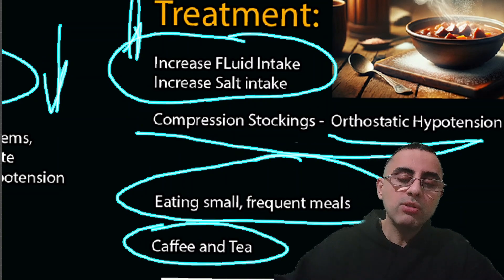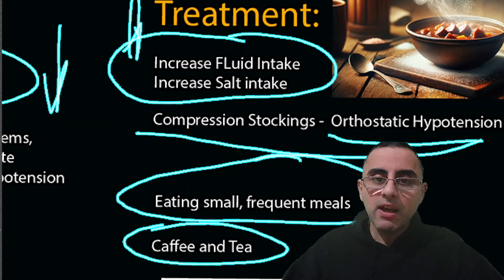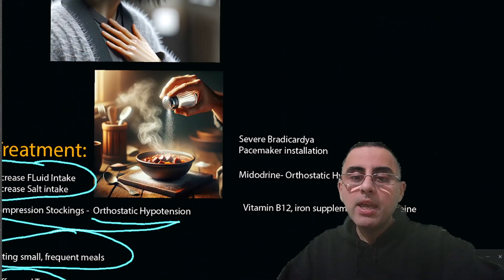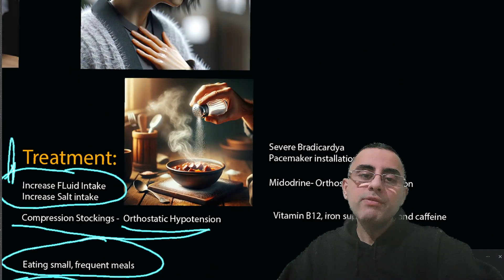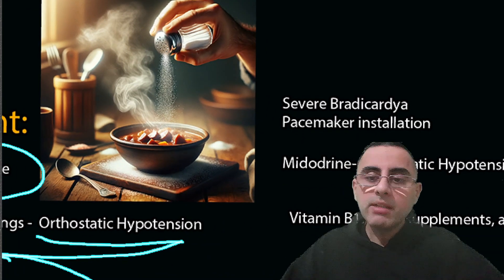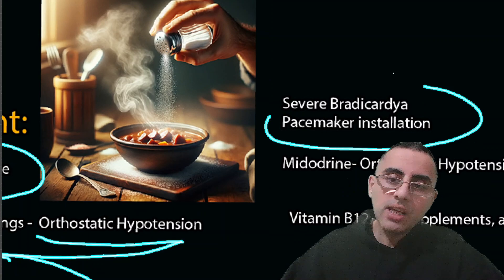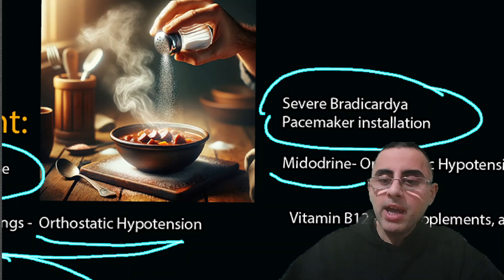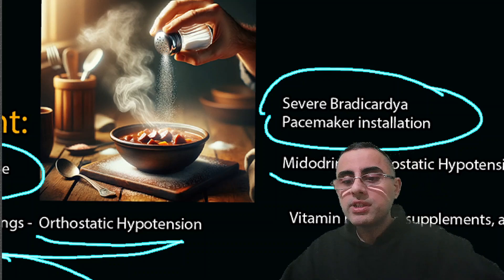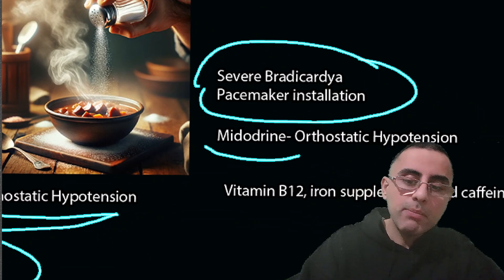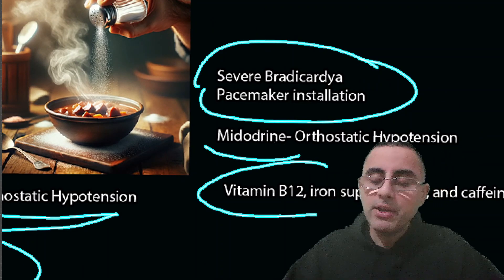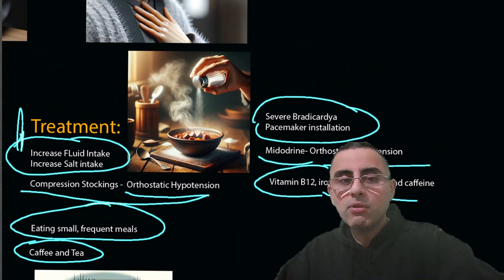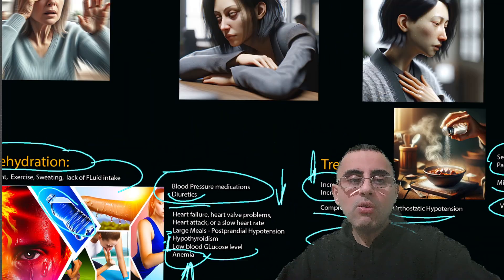For postprandial hypotension, eating small frequent meals is recommended. Coffee and tea are also part of treatment because they contain caffeine, which causes a temporary boost in blood pressure. If bradycardia is the cause, pacemaker installation may be the solution. Midodrine is an approved medication used to treat orthostatic hypotension. Supplements such as vitamin B12, iron, and caffeine tablets are also used.